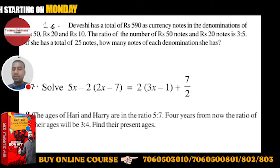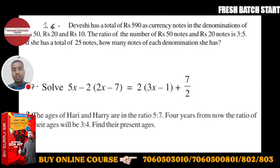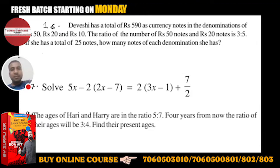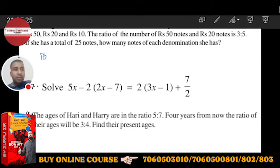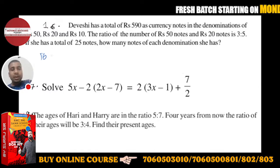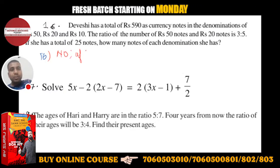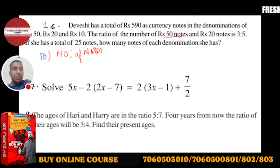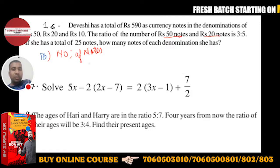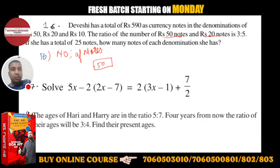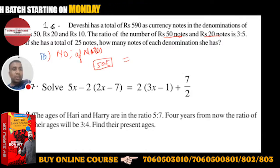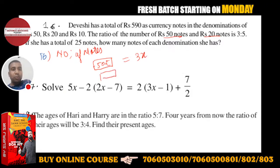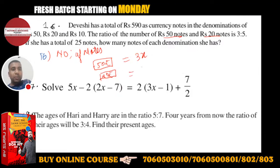This one is also easy. You will take common multiple, very easy. So question number 16, number of notes. Number of notes - you have the ratio of 50 rupees notes and 20 rupees notes. So this is going to be 3x, and 20 rupees notes will be 5x, very easy.